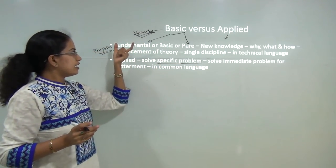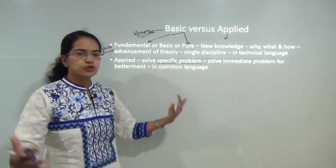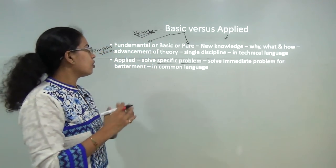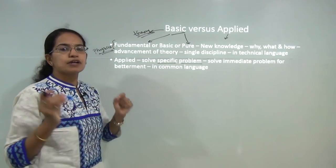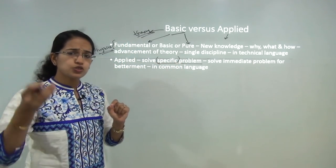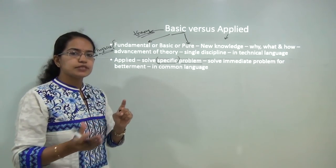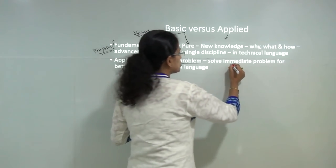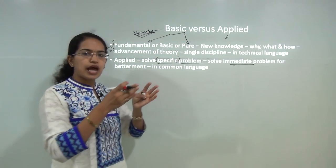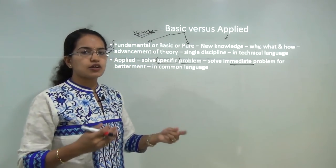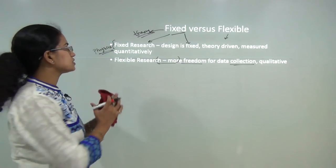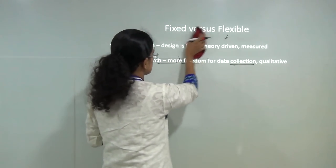Applied research aims to solve specific problems — that is the key. Under fundamental research we are trying to gain new knowledge, exploring all areas: why, what, how, where. But applied research merely focuses on a specific problem, and the aim is to get an immediate solution to that problem. Since applied research is aimed at a specific problem, it is usually written in common man's language that everyone from all backgrounds can understand.